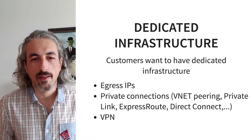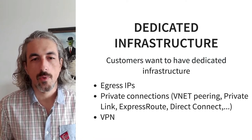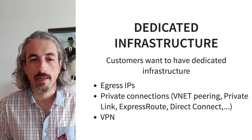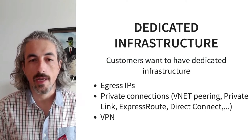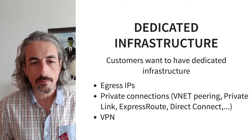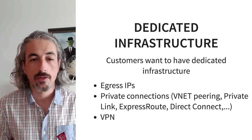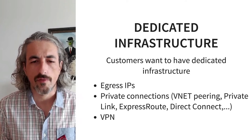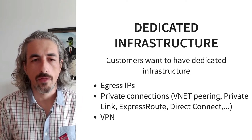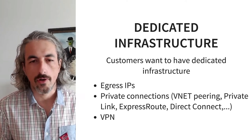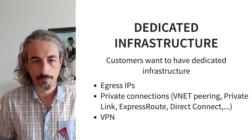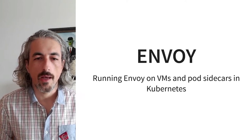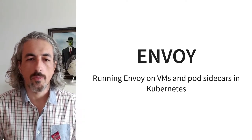For the dedicated infrastructure part, customers want their own egress IPs because by default all tenants on the same cluster share the cluster egress IPs. They may also want private connections — vnet peering, Private Link, Express Route — all things the cloud provider offers, or they want to connect via VPN to their on-premise or other cloud assets.